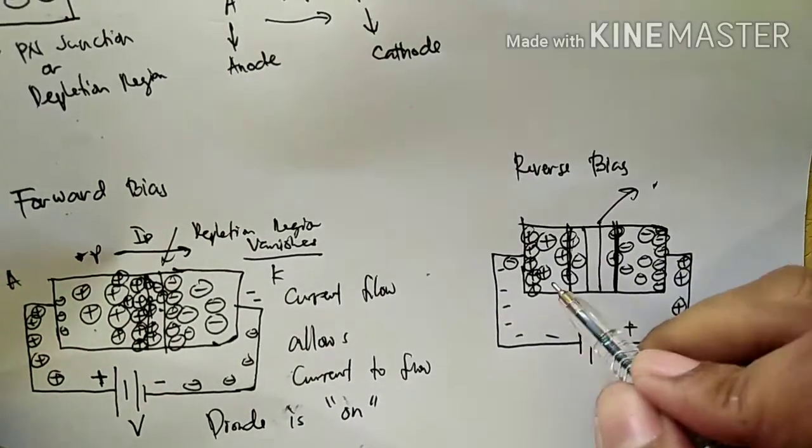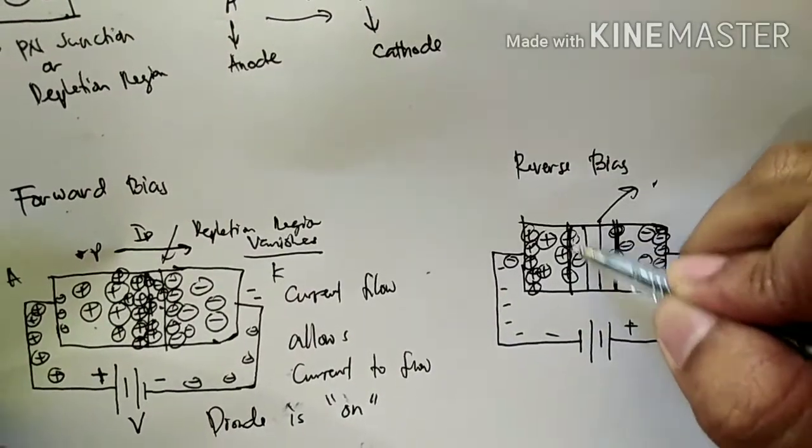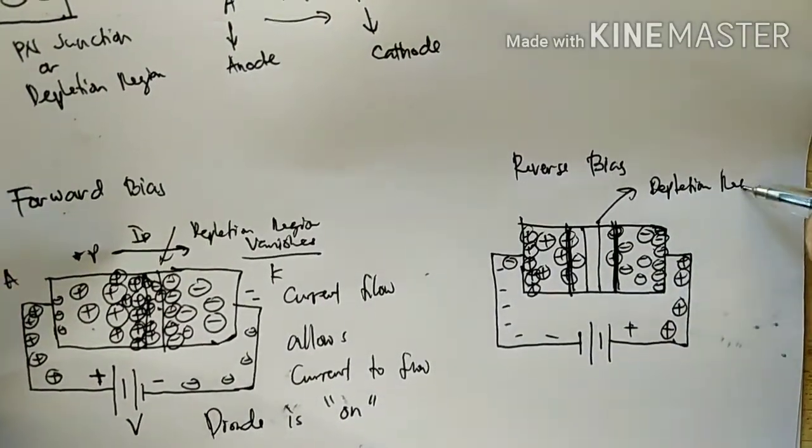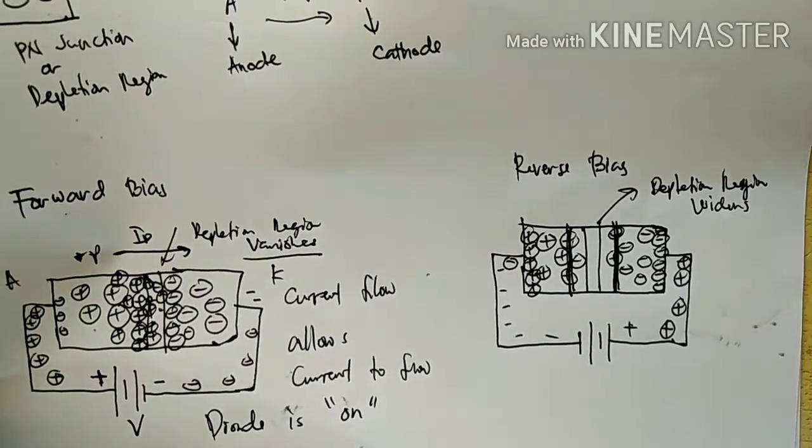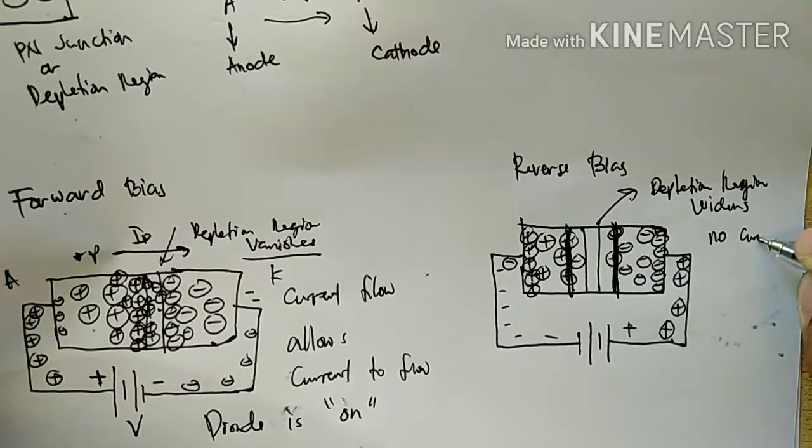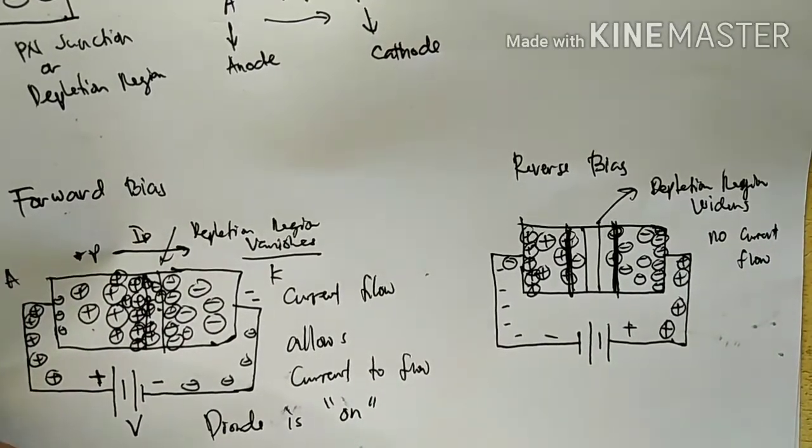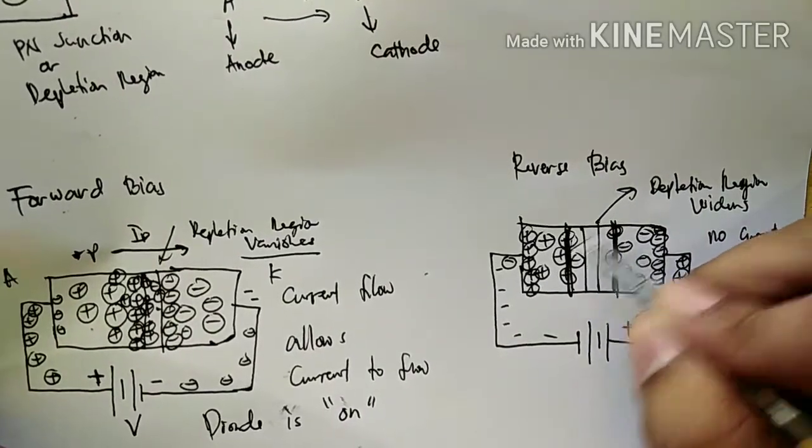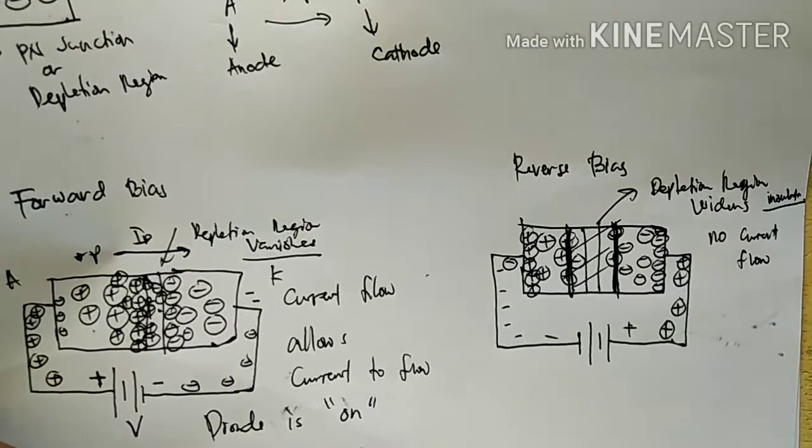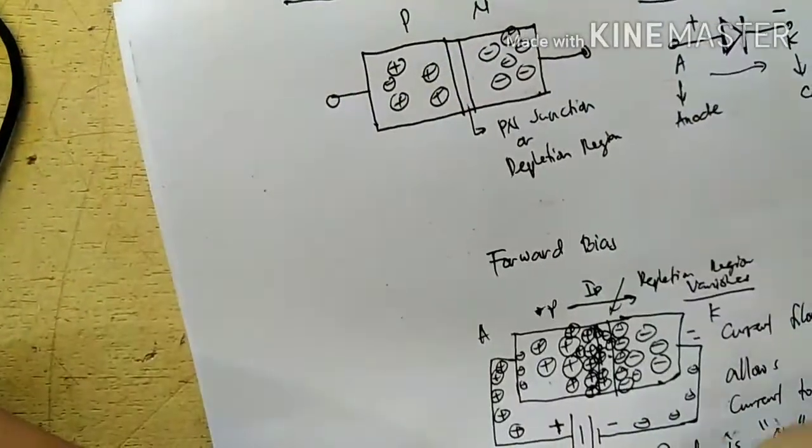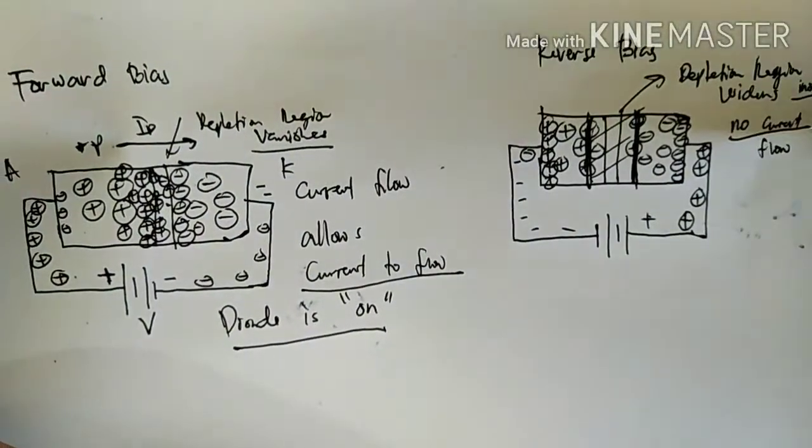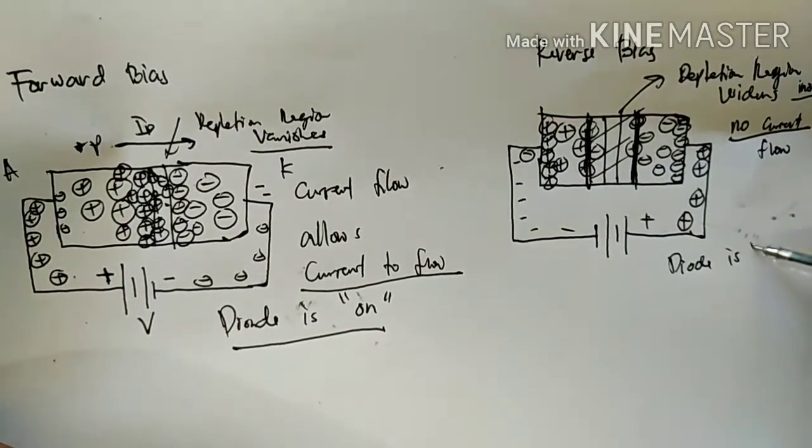What will happen to the depletion region? The depletion region widens. Once the depletion region widens, it will not allow current to flow, no current flow. Since in our past discussion, the depletion region has a characteristic of an insulator, it does not allow current to flow. So meaning in the forward bias direction, the diode is on and has current flow. Likewise, in the reverse bias direction, no current flow, the diode is off.